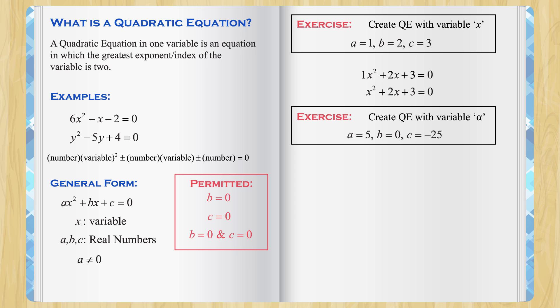Now, let's move on to the next exercise which says, create a quadratic equation in variable alpha with a equal to 5, b equal to 0 and c equal to negative 25.